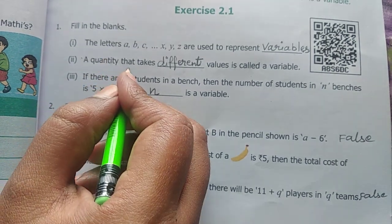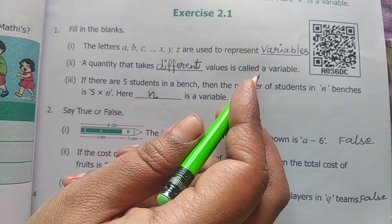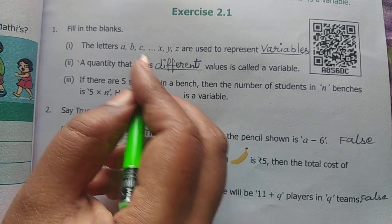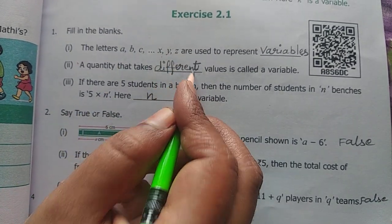A quantity that takes different values is called a variable. Quantity ile vandhu, nama variables yipdi yirukkou? Different than erukkou, so different.